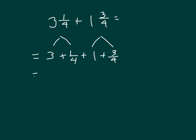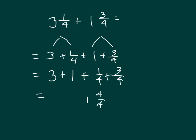Next, we group like units: three plus one for the ones, and one fourth plus three fourths. One fourth and three fourths equals four fourths. Three plus one gives us four. So we have four ones plus four fourths. We know that four fourths equals one, so we have four plus one, which equals five.